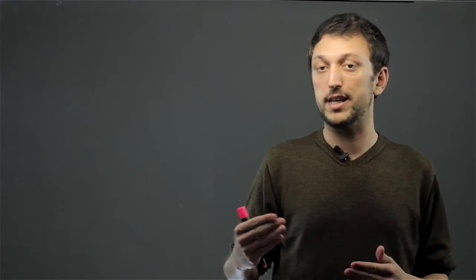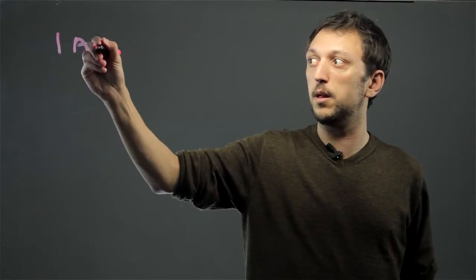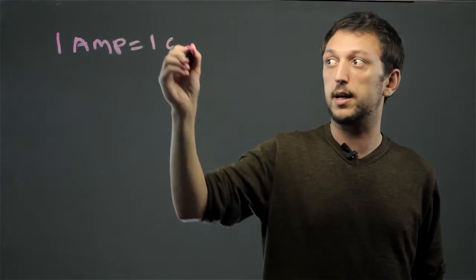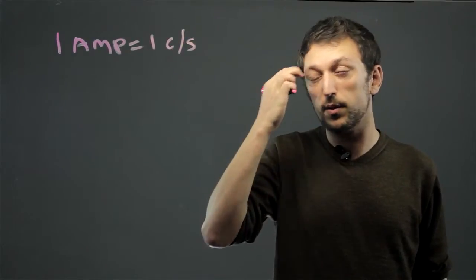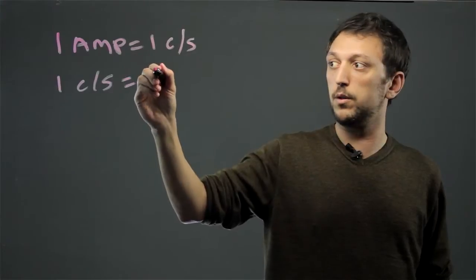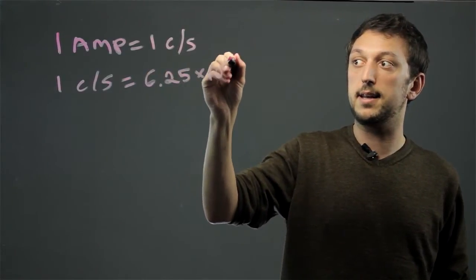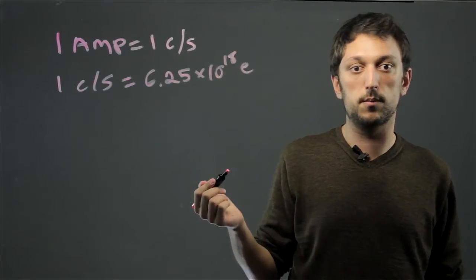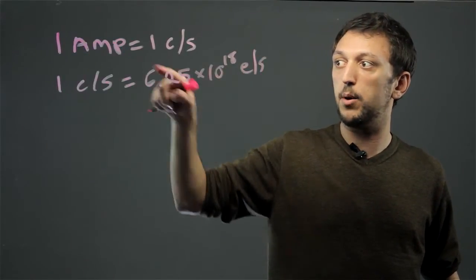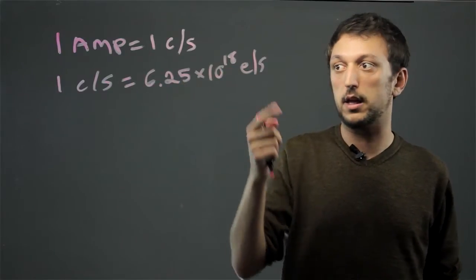First we need to convert the amps into coulombs. One amp equals one coulomb per second, and one coulomb per second equals 6.25 times 10 to the 18th electrons per second. So for every one amp we have 6.25 times 10 to the 18th electrons per second.